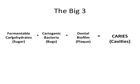We need fermentable carbohydrates or sugar, we need cariogenic bacteria — sometimes referred to as the bugs — and we need a dental biofilm or plaque. We need these bacteria to arrange a certain way on the tooth. This will cause caries, more commonly referred to as cavities. Caries in Latin simply means decay, so that makes sense.